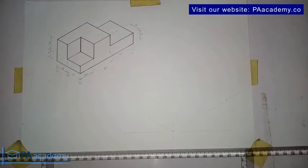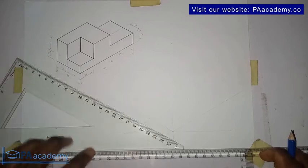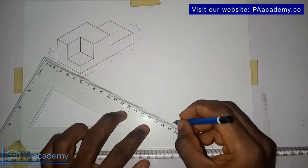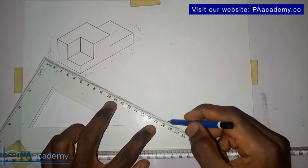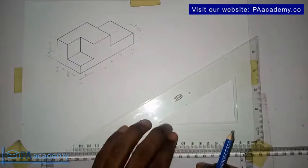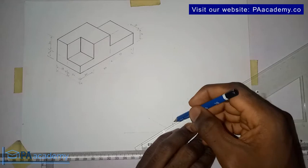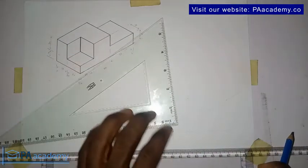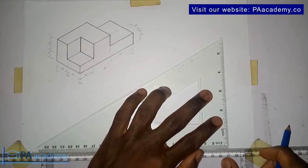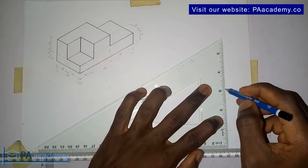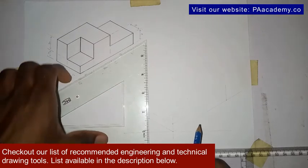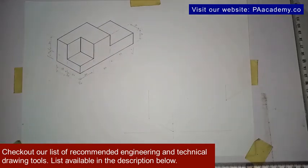So what you are going to do next is bring back your T-square. This is with a faint line. Do the same thing here.